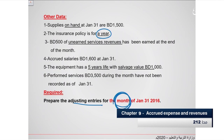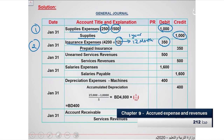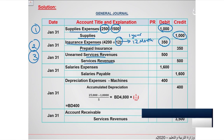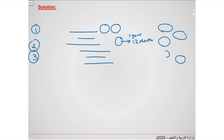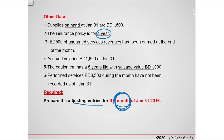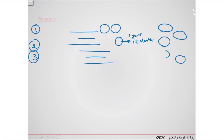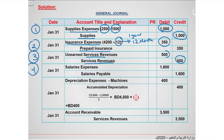Transaction three: $500 of unearned service revenue has been earned at the end of the month. Put unearned service revenue on the debit side and service revenue on the credit side, $500 debit and $500 credit. Transaction four: accrued salaries of $1,600 are mentioned. Put salaries expense on the debit side and salaries payable on the credit side, $1,600 debit and $1,600 credit.